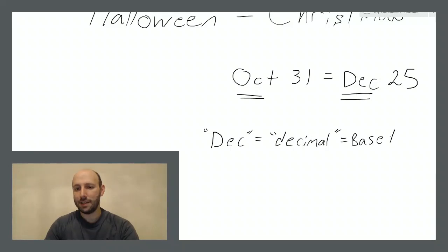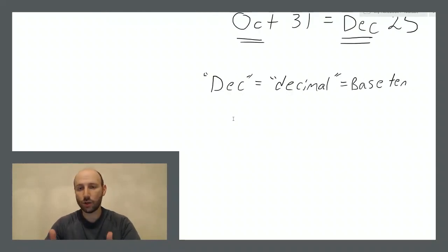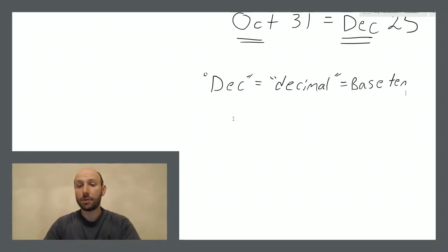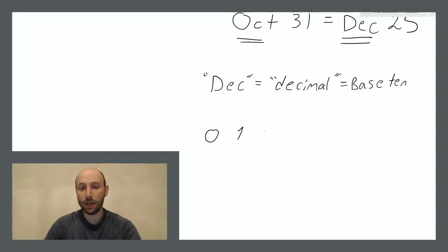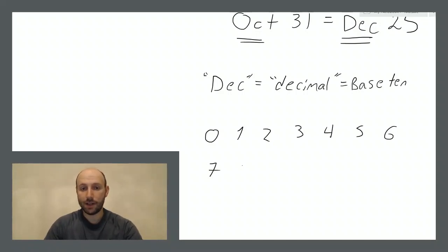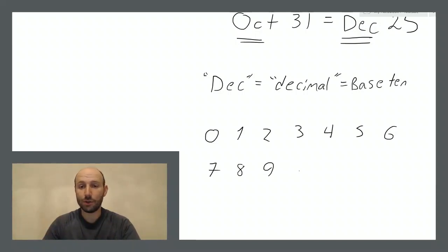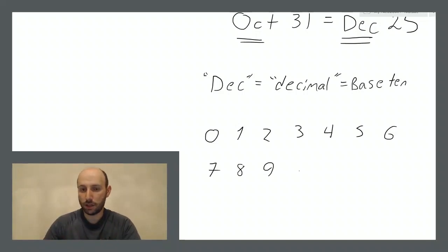So what is a base 10 system? It's a numerical system — there are different ways you can record amounts. People are familiar with the decimal system, sometimes referred to as the Indian or Arabic system, and also the Roman numeral system. The base 10 system is a system where you have 10 symbols: in our case, zero, one, two, three, four, five, six, seven, eight, nine.